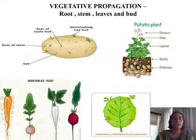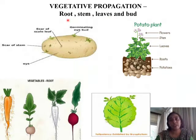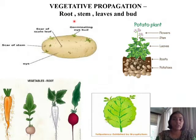The next method of asexual reproduction is vegetative propagation, and we find it in plants. Plants have certain vegetative parts like roots, stems, leaves, and buds. When these vegetative parts are used to make new plants, it is called vegetative propagation.